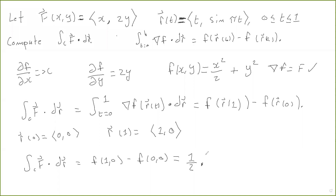So the outline is: if you know that the vector field is conservative — in other words, it's the gradient of some potential function — then you figure out what that potential function is. We'll come up with a systematic way to do that. Then you just do f of the endpoint minus f of the starting point. This is how you use the fundamental theorem of line integrals to compute line integrals.